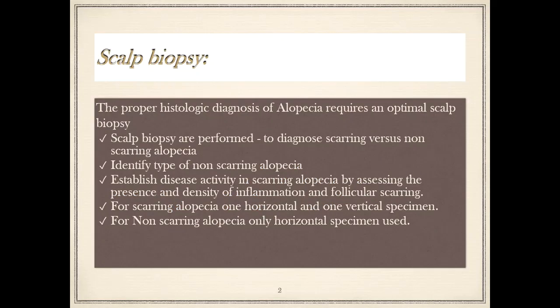How do we diagnose alopecia? The proper histologic diagnosis of alopecia requires an optimal scalp biopsy. Scalp biopsies are performed mainly to diagnose scarring versus non-scarring alopecia, identify the type of non-scarring alopecia, and establish disease activity in scarring alopecia by assessing the presence and density of inflammation and follicular scarring. For scarring alopecia, one horizontal and one vertical specimen is used. For non-scarring alopecia, only a horizontal specimen is used.